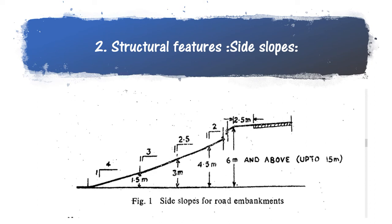The second topic is structural features — specifically the side slopes according to Indian Road Congress. The preferred slope is 1 vertical to 4 horizontal for fill heights less than 1.5 meters. For 3 meters the better slope is 1:3 to 1:2.5, and for more than 6 meters it is 1:2. Above 15 meters, a minimum slope of 1:2 is preferred. A verge width of minimum 2.5 meters is defined based on traffic speed.